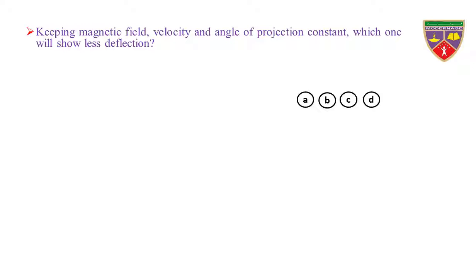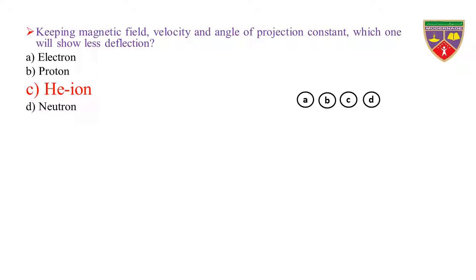Keeping magnetic field, velocity, and angle of projection constant, which one will show less deflection? Option A: electron. Option B: proton. Option C: helium ion. Option D: neutron. The key is helium ion. Therefore, the correct option is C.